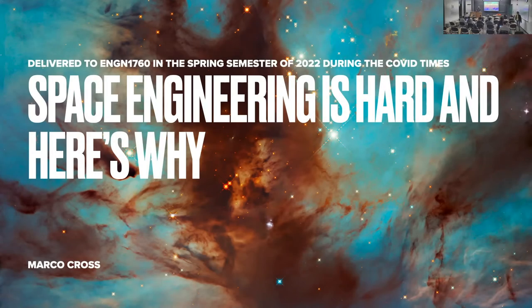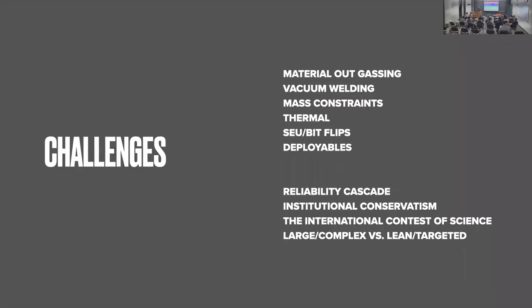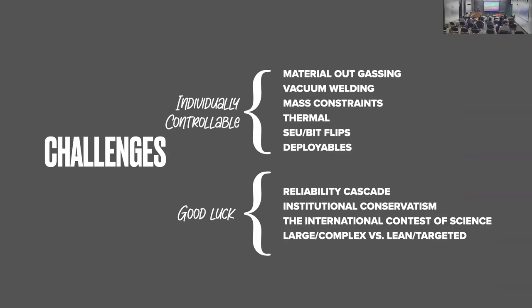All right, let's get going. Today we're going to talk about some of the practical applications and issues associated with space engineering. There are two categories of topics: things that you can individually control when you're thinking about building out your space system, and things that you absolutely cannot control but probably should consider as you move forward. Let's talk about the easy stuff first — the individually controllable engineering issues.